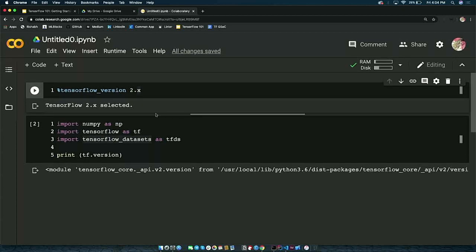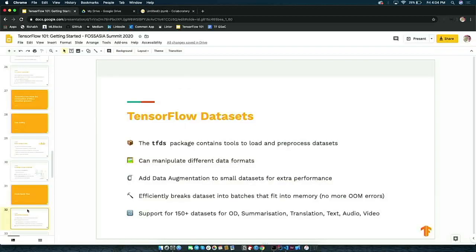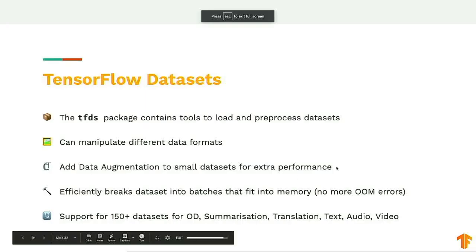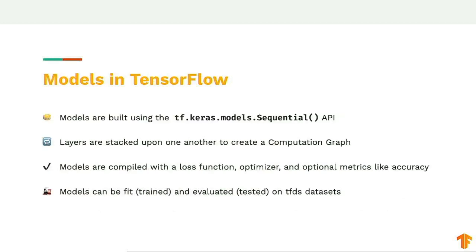Now that we are using 2.x, we have imported NumPy, TensorFlow, and TFDS. The next concept to move on to is TensorFlow models. To build a model or neural network, as mentioned earlier, you use the Sequential API — a container where you put your layers one on top of each other.